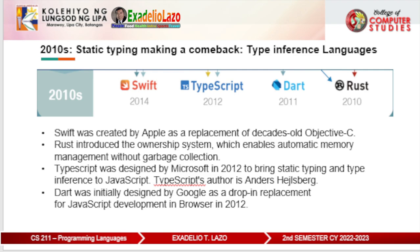Dart was initially designed by Google in 2012 as a drop-in replacement for JavaScript development in the browser. Adoption had been low since there were many contenders in the same era, such as TypeScript. The language got a second life when Google announced Flutter, a cross-platform mobile application development framework in 2016, which used Dart as its development language. Swift was created by Apple as a replacement for the decades-old Objective-C. Unlike Objective-C, it followed many design decisions rooted in the C language family. Nowadays, Swift is the primary language for development on macOS and iOS.